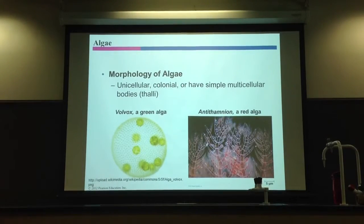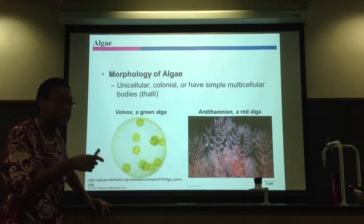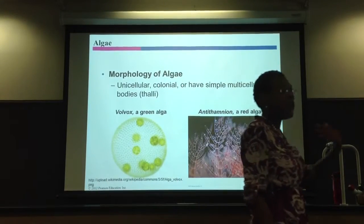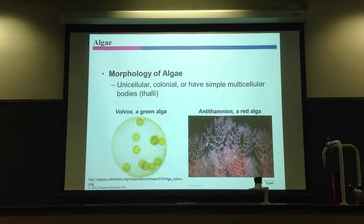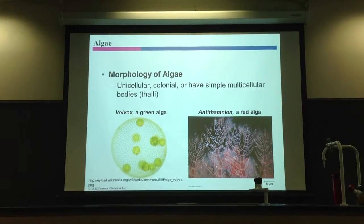Let's get into the morphology of algae. Protozoans are unicellular — they all are. Fungi are some unicellular, like yeast, but others like molds and mushrooms are multicellular. With algae, they can come in different forms: some are unicellular, some are colonial. If they are colonial — like Volvox, for example, a type of green algae — individual Volvox colonies live inside a sphere. Each can live on its own. They can go on their own way, but they are colonial. Or they can have simple multicellular structures, and if they do, we call that whole structure a thallus.